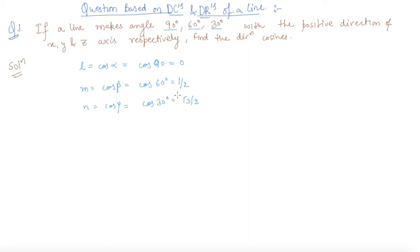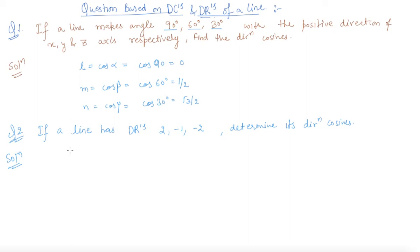Now let us discuss another question. Here is question number 2, which states that if a line has direction ratios given as 2, -1 and 2, we need to find out the direction cosines.